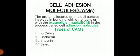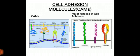Cell adhesion molecules have an extracellular domain. With the help of it, a CAM attaches or binds with another CAM. There are two types of binding: number one is homophilic binding and number two is heterophilic binding. In homophilic binding, one type of cell adhesion molecule binds with the same type of cell adhesion molecule. While in heterophilic binding, a CAM of one cell binds with a different CAM of another cell. The major families of cell adhesion molecules are: Ig-CAM, cadherin, integrin, and selectin.